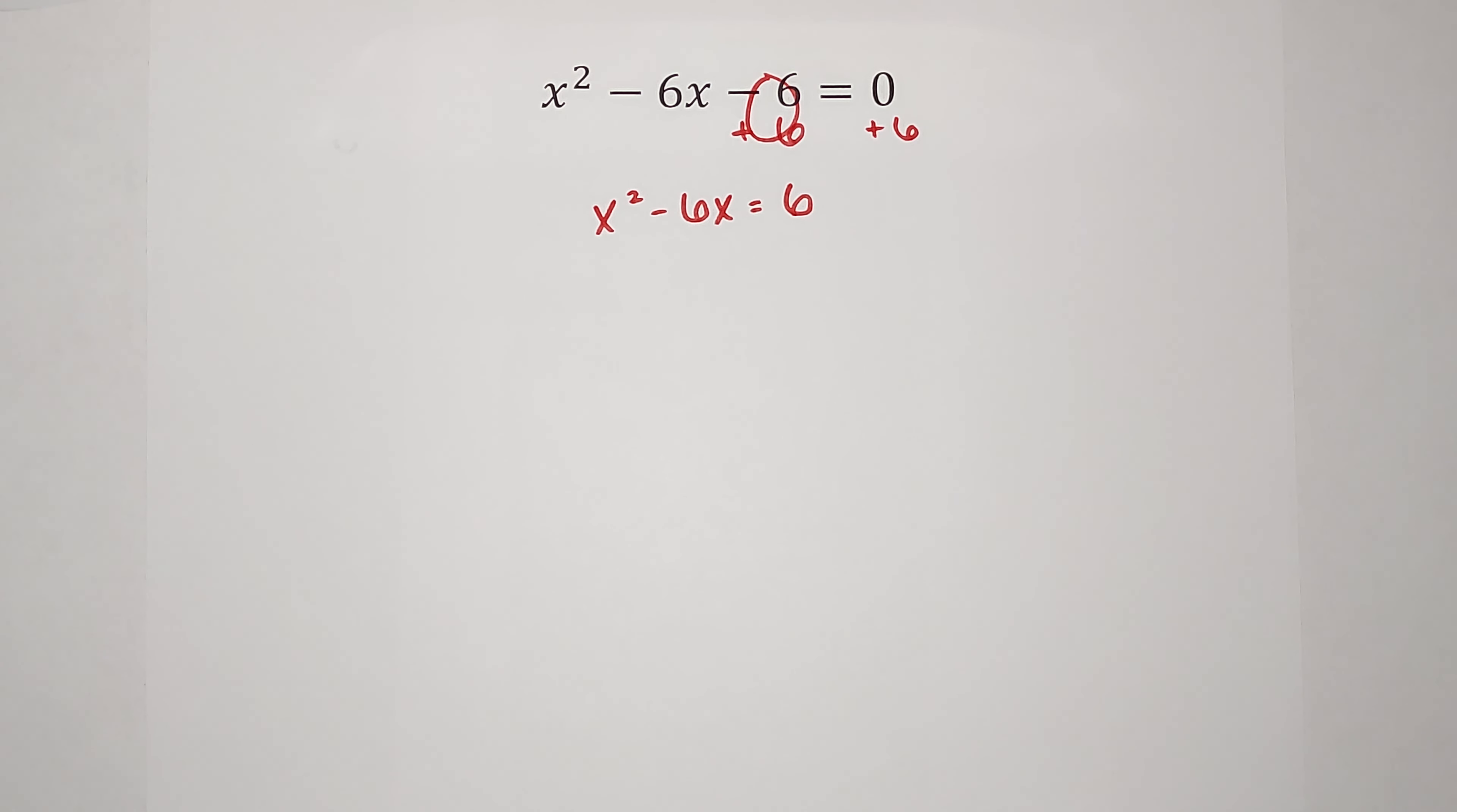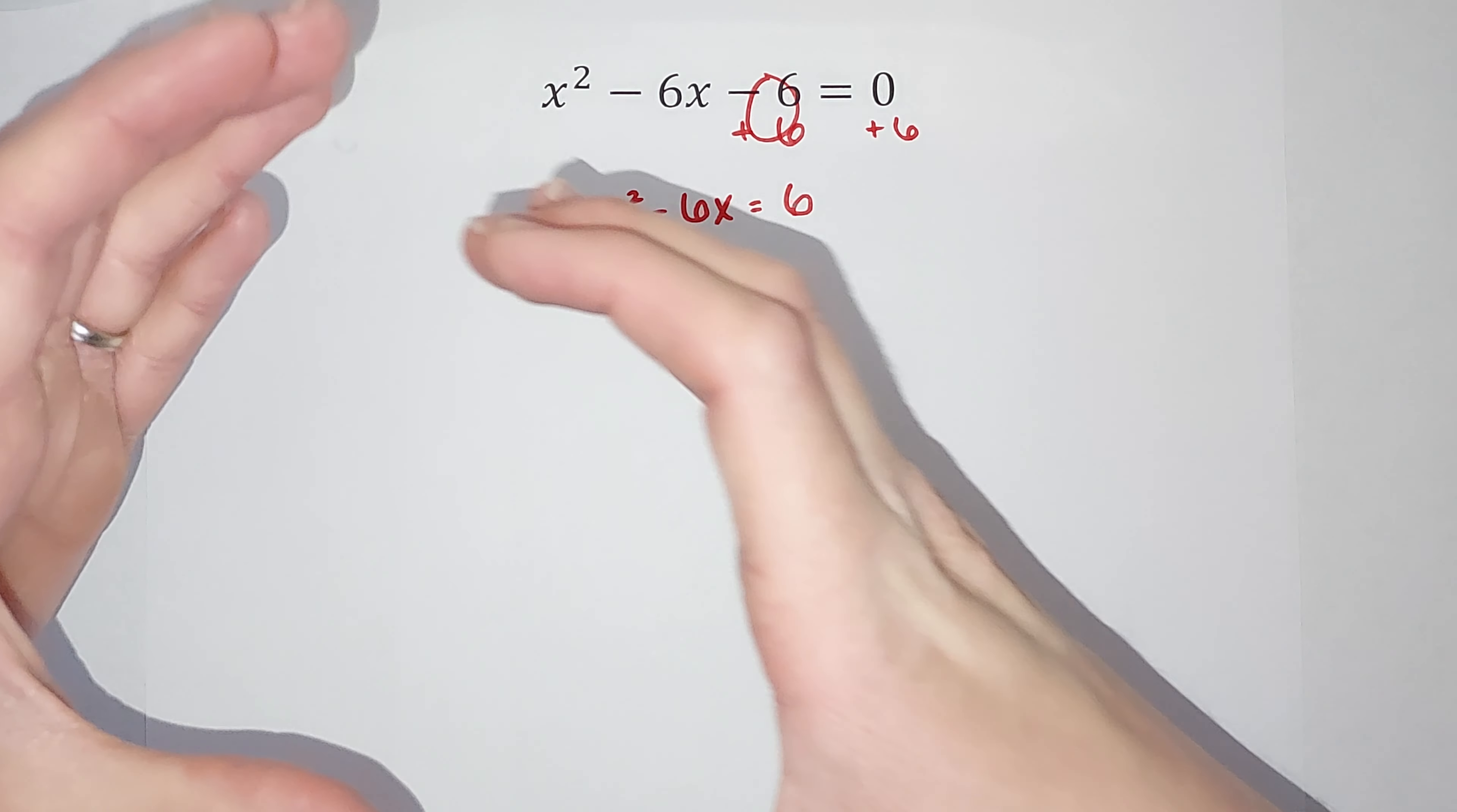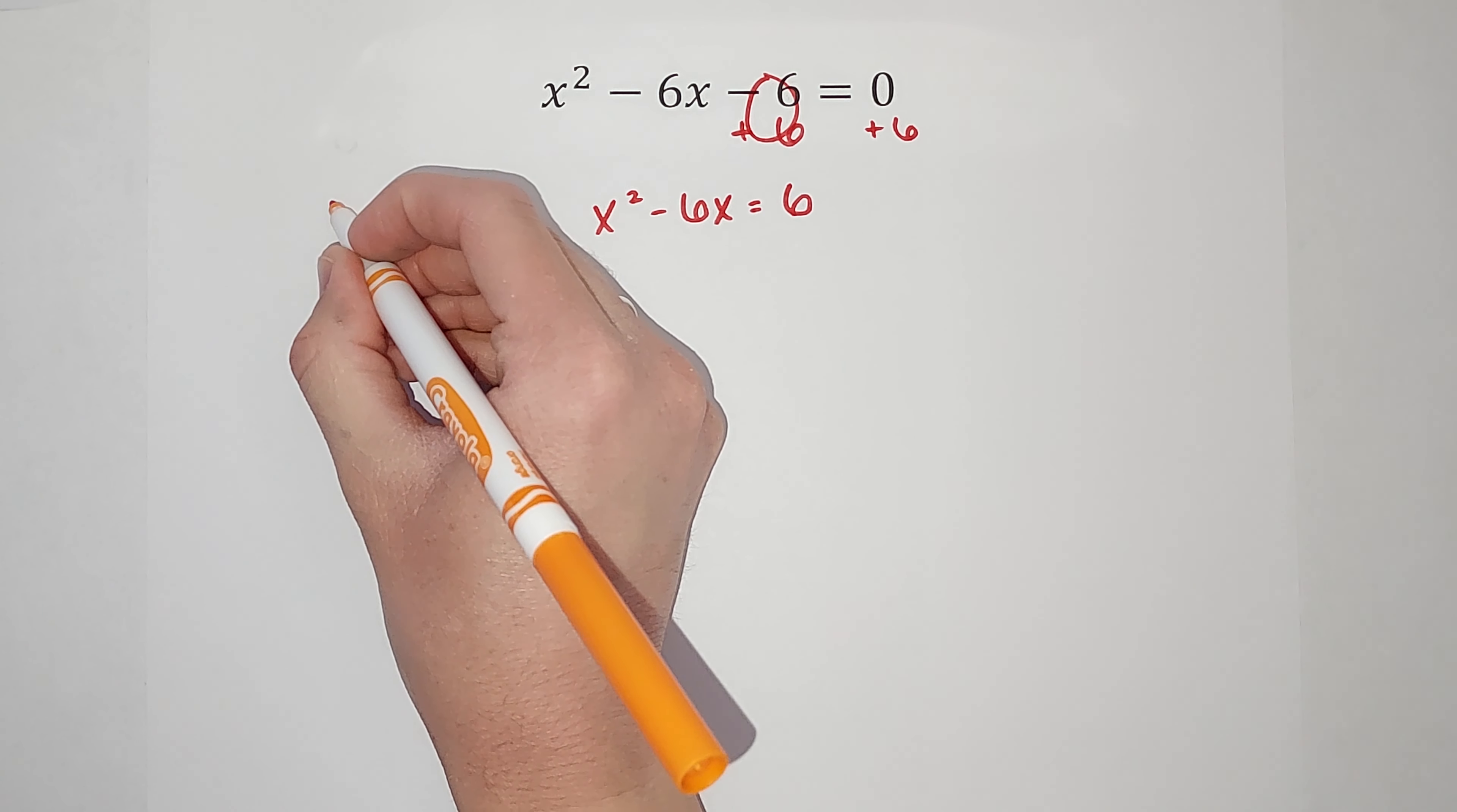Now what I want to do, I want to figure out what number I can add to this side to make it so this factors to parentheses times themself. If you're like, that made no sense, stick with me. I'll show you what I mean. To find what number will help me do that, I am going to take b, divide it by 2, and square it.